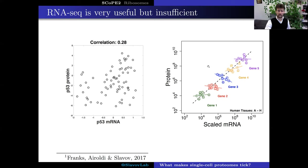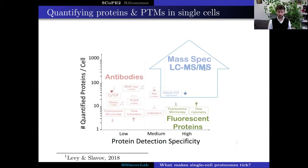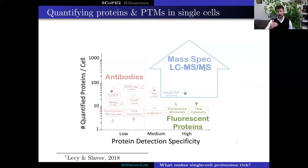This motivates the need to perform not just RNA measurements but also protein measurements. Such protein measurements are usually performed using antibody approaches, but they afford only limited specificity and have allowed quantifying relatively few proteins per sample. So we were interested in developing mass spectrometry-based methods that can increase both the specificity and throughput of quantification, allowing us to specifically quantify many thousands of proteins across many thousands of single cells.